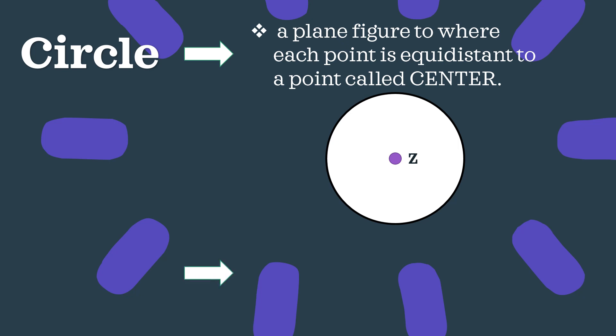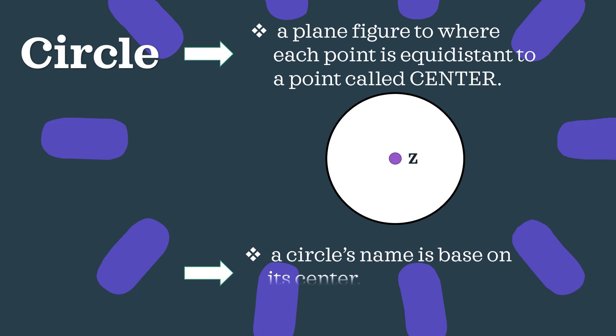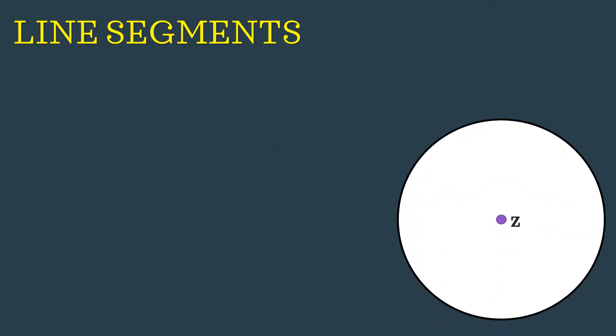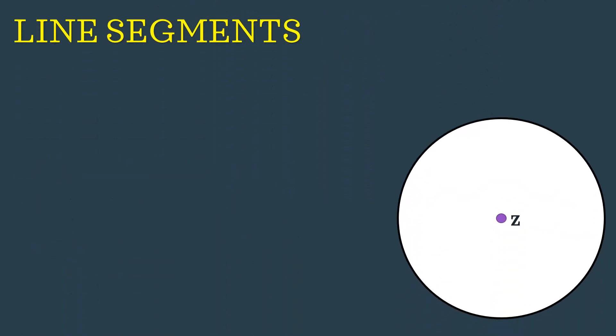A circle's name is based on its center. So therefore, in this figure of ours, we may call this circle Z. Now, what are the terms related to a circle? In terms of line segments, we have three terminologies related to this.